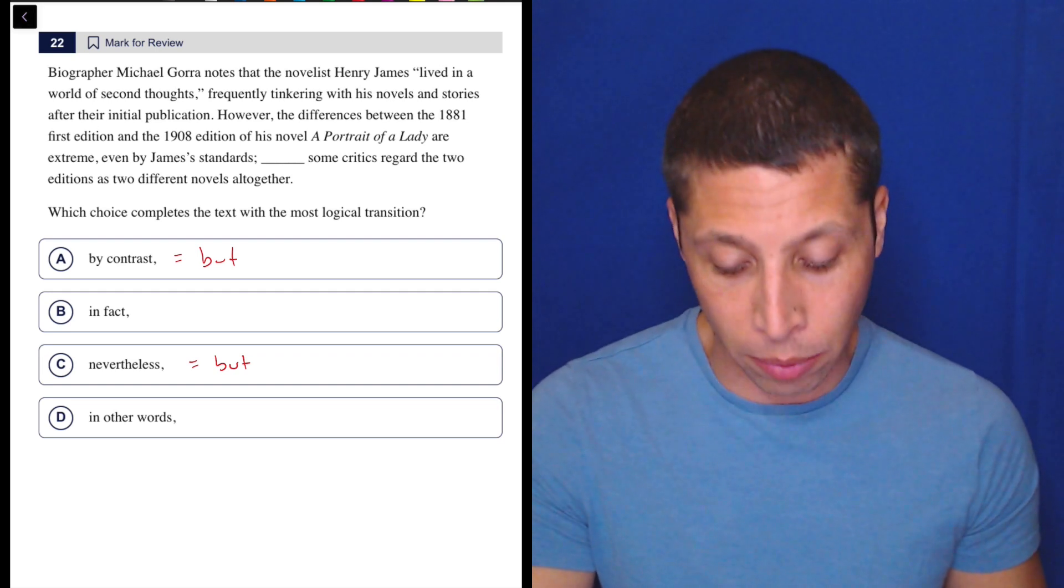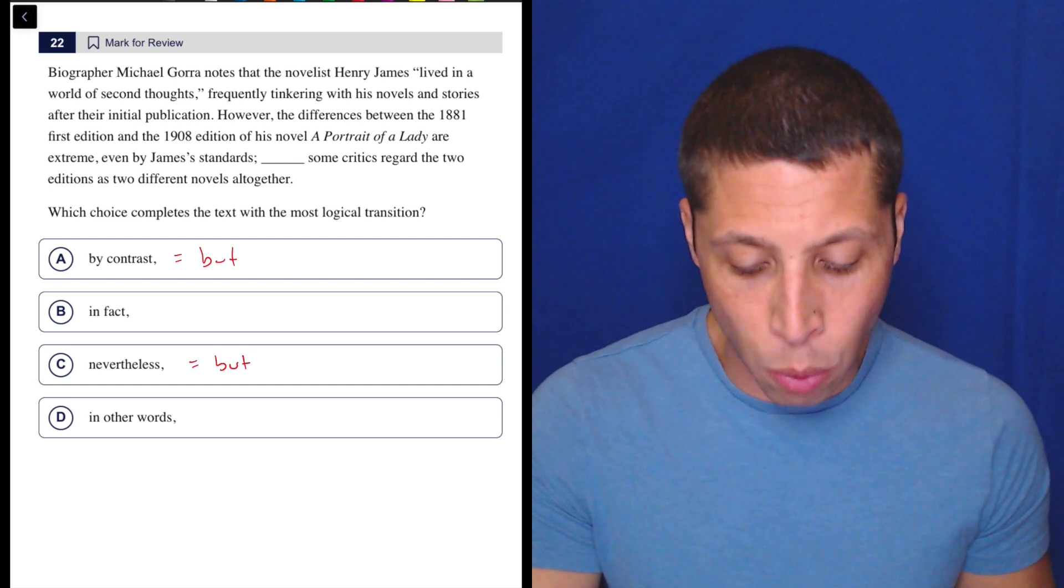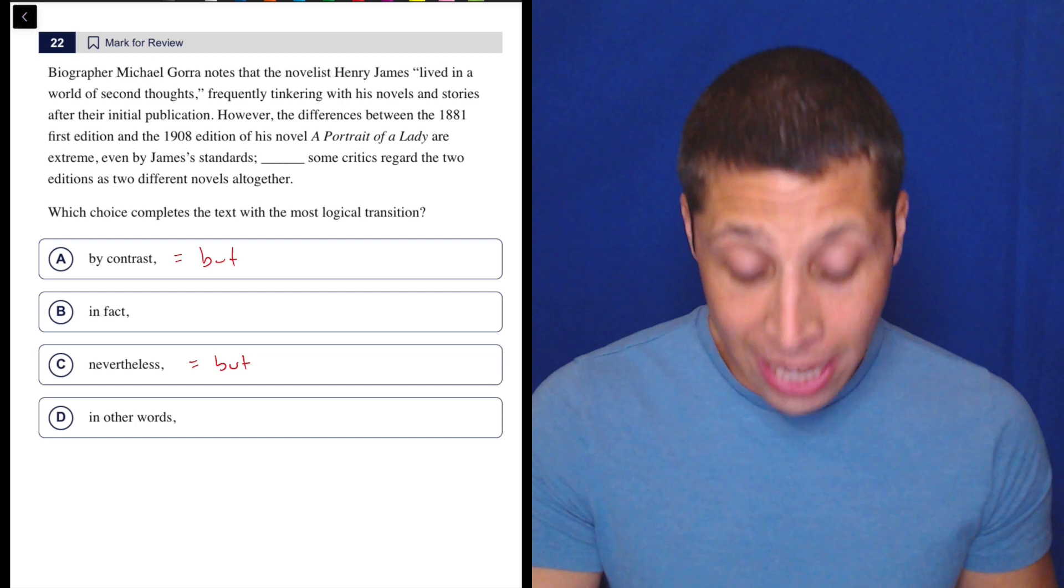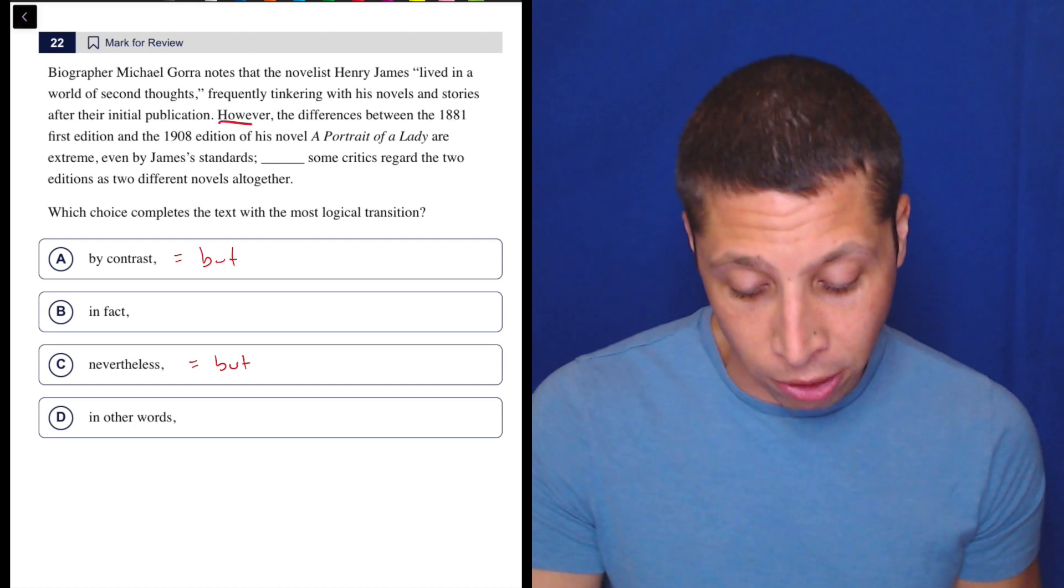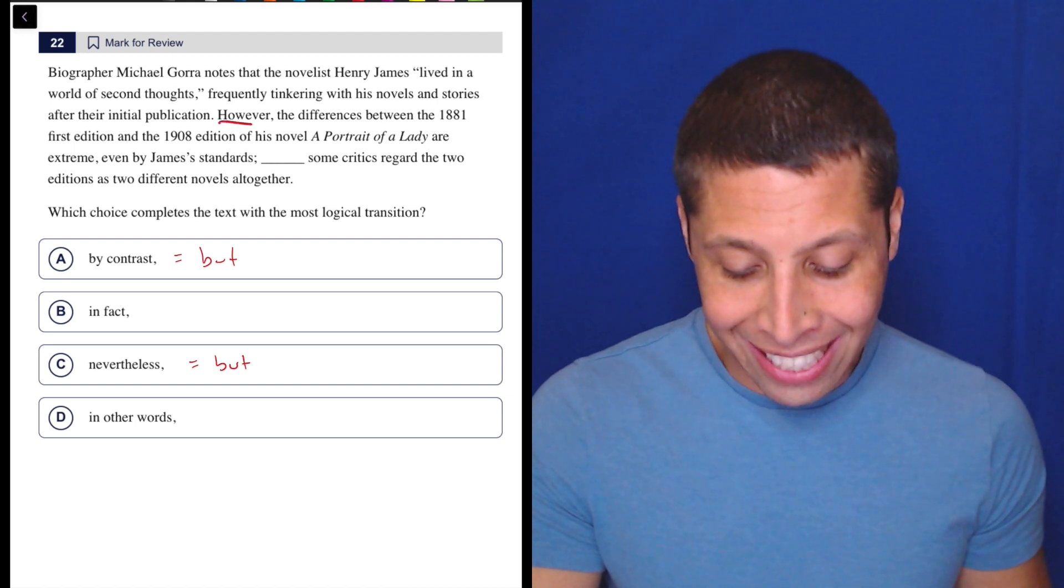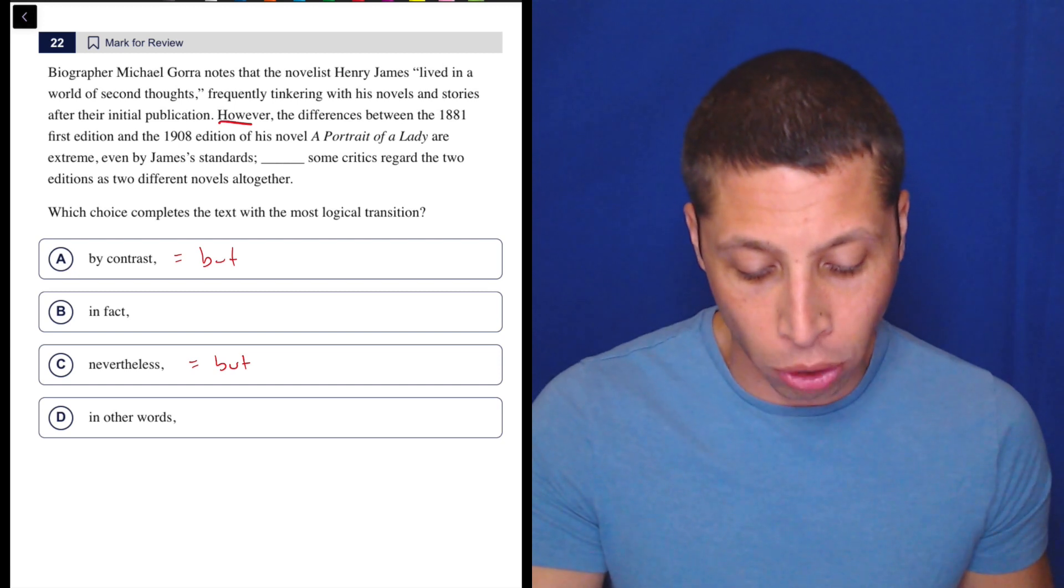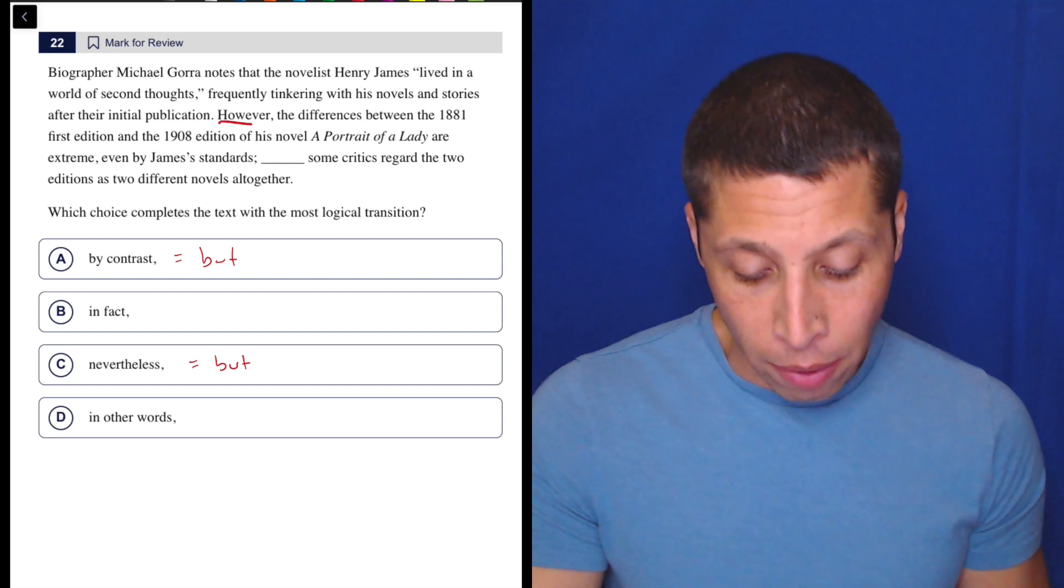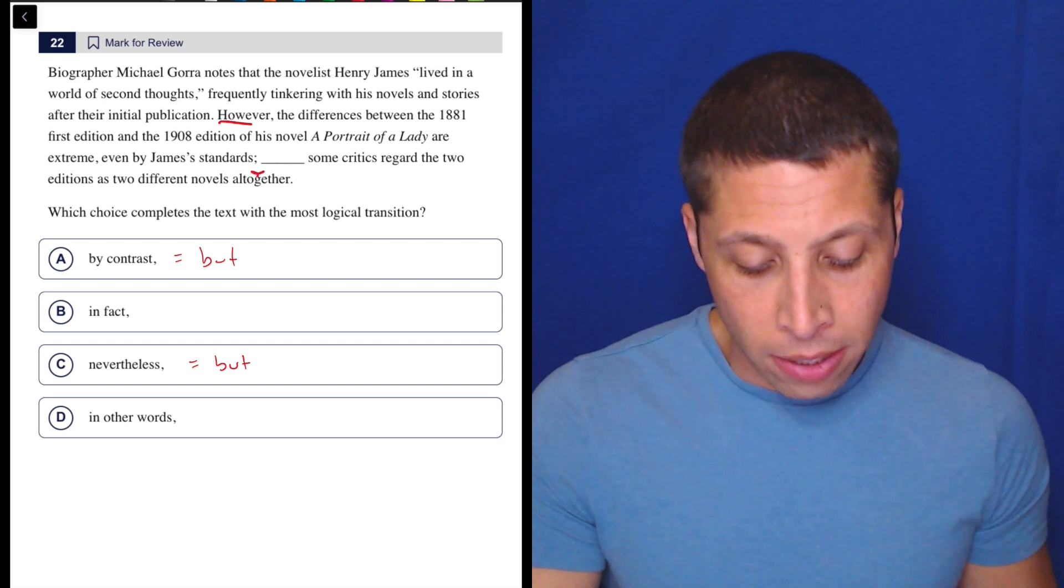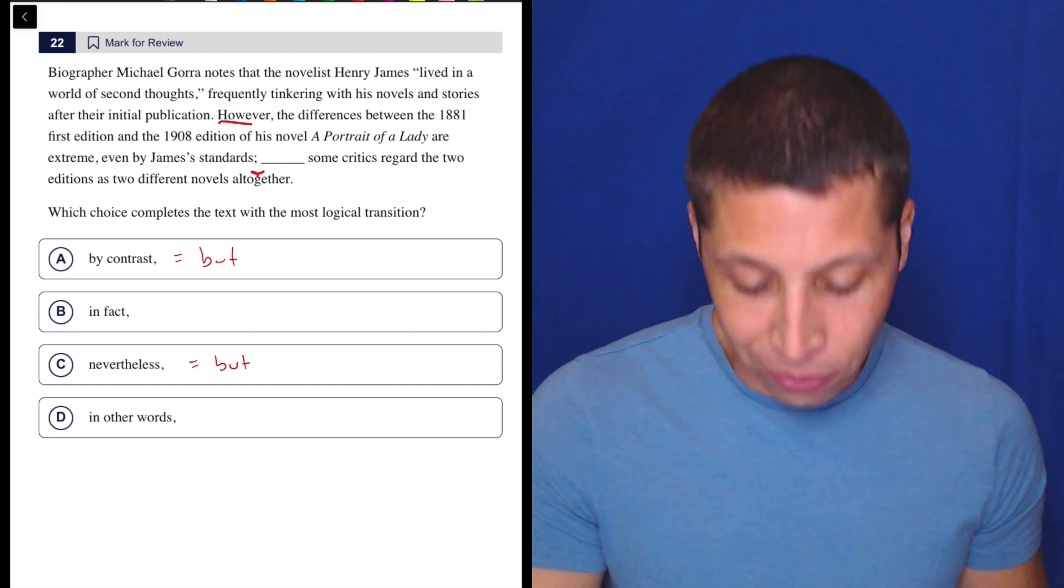Biographer Michael Goran notes that the novelist Henry James lived in a world of second thoughts, frequently tinkering with his novels and stories after their initial publication. However, the differences between the 1881 first edition and the 1908 edition of his novel A Portrait of a Lady are extreme, even by James's standards. Some critics regard the two editions as two different novels altogether.